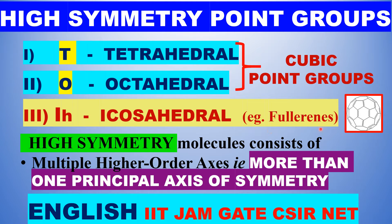For example, fullerenes — soccer ball fullerenes — are an example of icosahedral symmetry. The tetrahedral and octahedral point groups are collectively called cubic point groups.